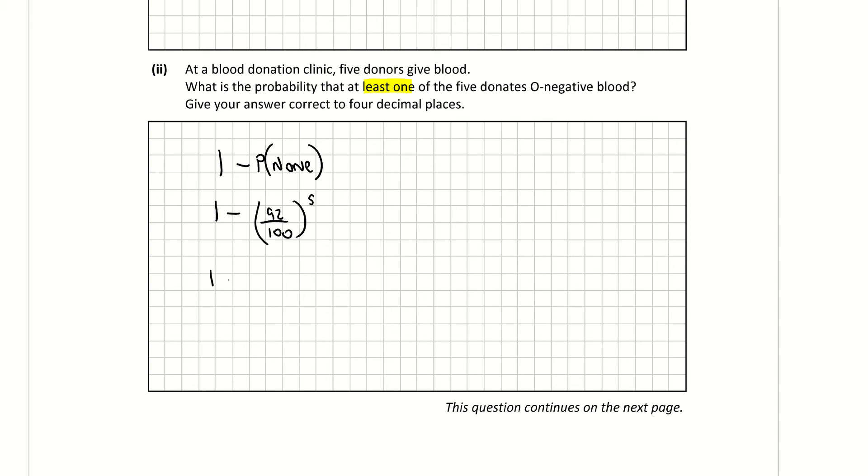So that would give me 1 subtract 0.65908, which is 0.340918. And again, the question wants it to 4 decimal points again, which would be 0.3409. So that's the probability of at least one of them being O negative.